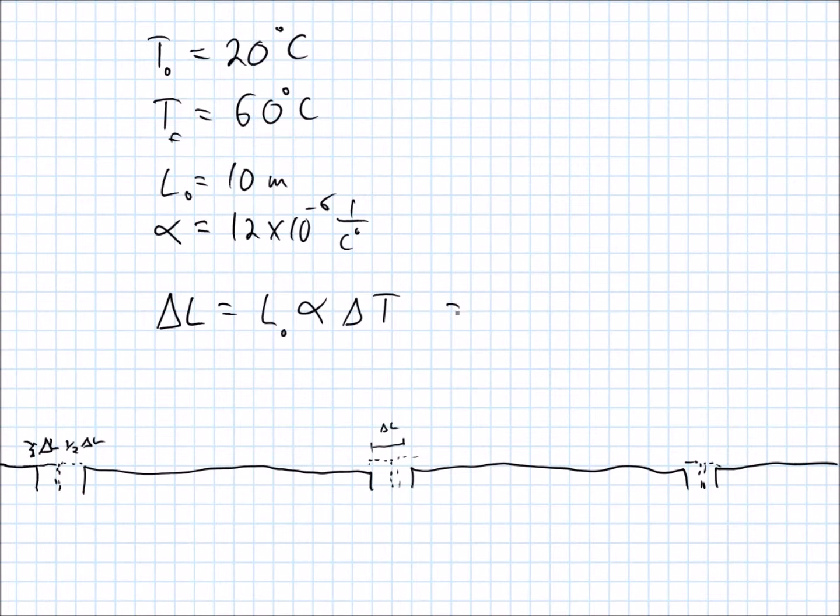So I guess I could go ahead and plug some numbers in here. We got 10 times 12 times 10 to the negative 6, times the final temperature minus initial temperature makes 40 degrees Celsius. Okay, so let's see, this 10 and the 10 on there makes this come to 10 to the negative 4th, and we've got 12 times 4, times 10 to the negative 4th, 12 times 4 is 48. So I'm getting 48 times 10 to the negative 4th meters, because that was in meters.